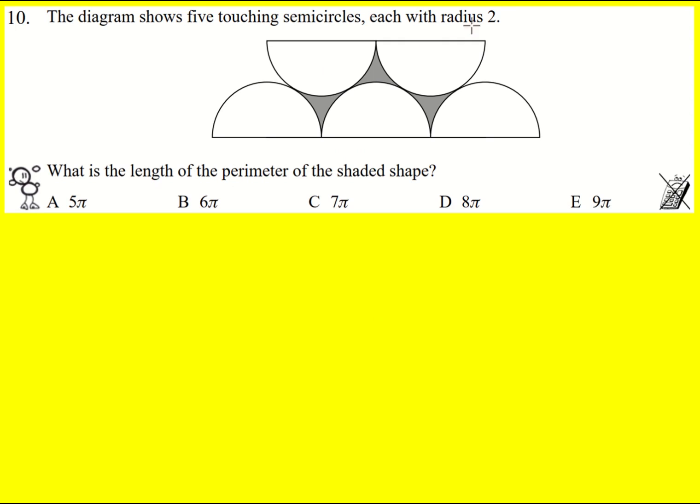We're given five touching semicircles, each with radius two, and we're asked for the length of the perimeter of this interesting shaded shape on the inside.